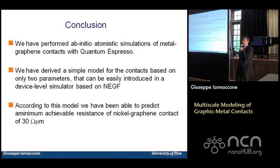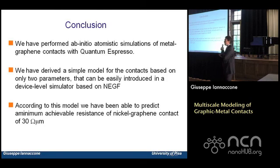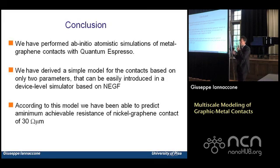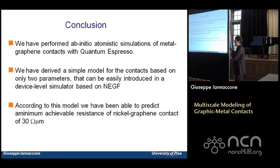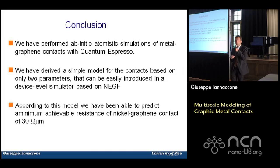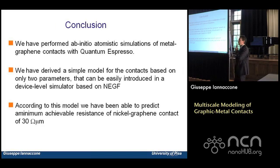In conclusion, we have performed ab initio atomistic simulations of metal graphene contacts with Quantum ESPRESSO. We derived a simple two-parameter model for the contacts that captures all the relevant physics and can be easily introduced into device-level NEGF simulators. According to this model, we predict a minimum achievable resistance for nickel-graphene contacts of about 30 ohm·μm. Thank you for your attention.